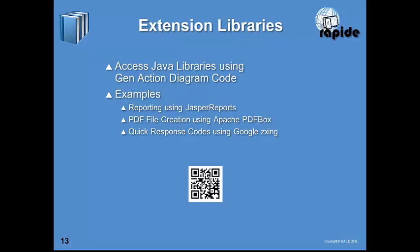RAPID also comes with a set of extension libraries, which allow you to access a standard Java library using Gen action diagram code. Instead of writing a call to an external library using an external action block, you can code calls to those libraries using Gen action diagram statements. Examples already built include application reporting using Jasper Reports, PDF file creation using Apache PDFBox, and a QR code generator using the Google Zebra Crossing library.